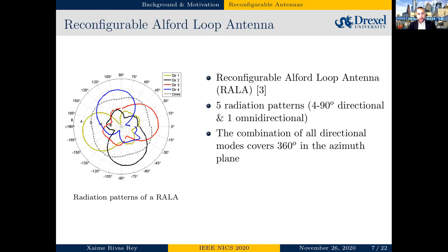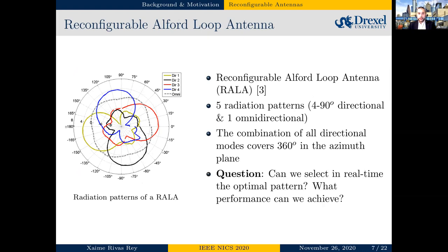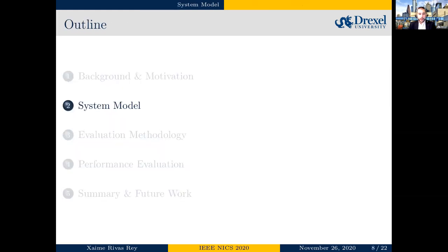The reconfigurable antenna used in this paper is called the Reconfigurable Alpha Loop Antenna (RALA), developed at the Drexel Wireless Systems Laboratory. It has five distinct radiation patterns: one omnidirectional and four 90-degree directional patterns, which together cover 360 degrees in the azimuthal plane. The question this paper tries to answer is: can we select the optimal antenna state at any given time, and if so, what performance can we achieve?